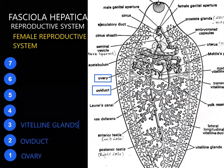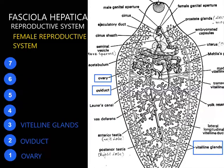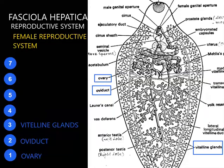The vitelline glands are a very major part of the reproductive system. These glands are numerous in number, single-celled, and found on the lateral sides of Fasciola hepatica — present on both sides of the animal. They produce a secretion called yolk. These vitelline glands produce yolk cells containing a shell-forming material, which forms a shell over the zygote and makes the capsules.